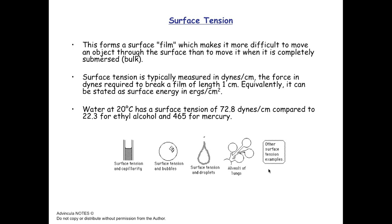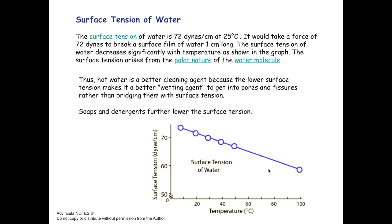Surface tension in water does change with temperature. At ambient temperature, the value of water is about 72 dynes per centimeter, and as the water temperature increases, that surface tension decreases. This arises from the interaction between the polar nature of water and the other phase — air or other non-polar surfaces such as plastic. Surface tension is decreased when you heat up water with a surfactant, and thus a lot of detergency or cleaning is aided by heating.